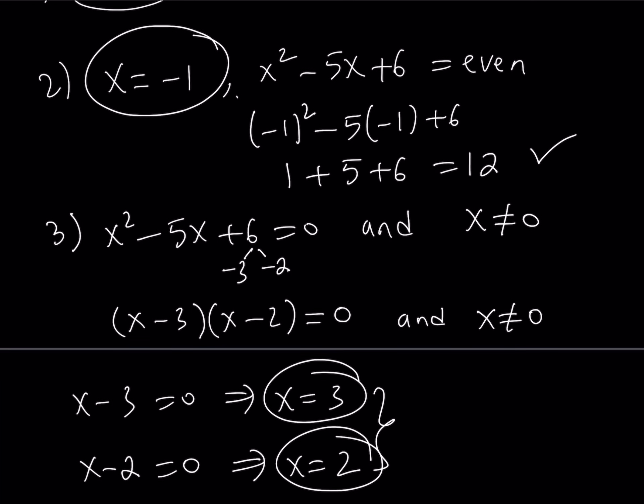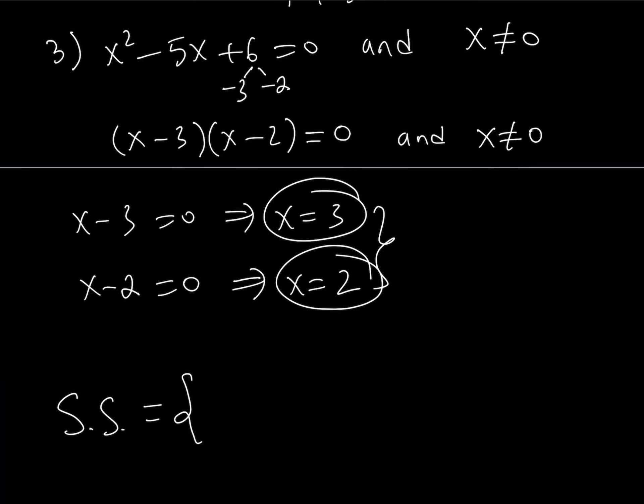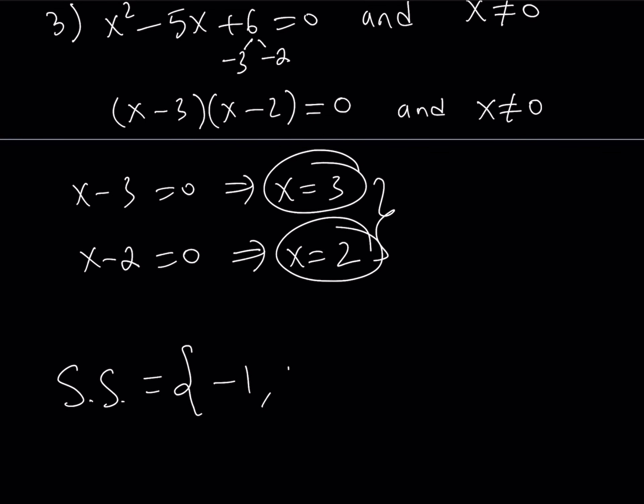Let's go ahead and put it all together. So I got, as my solution set so far, four solutions, right? I got the negative 1, I got the positive 1, I got the 2, and I got the 3. So these are all the solutions to this equation.